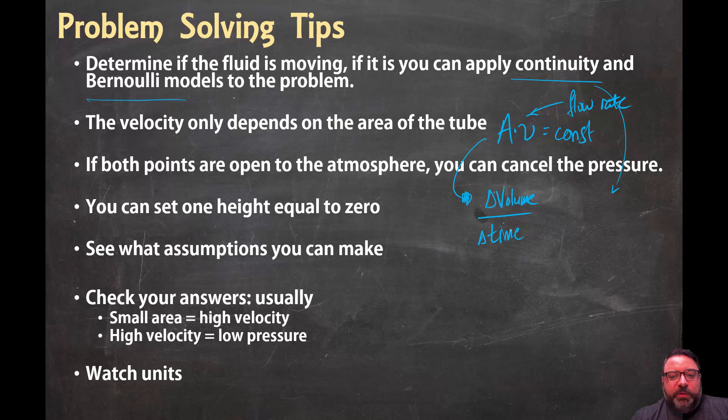So sometimes in a problem, you might be given the volume and the time. It might say, hey, three cubic meters of fluid flow into a tank in 30 seconds. So you'd have your three cubic meters over your 30 seconds and you get a flow rate of 0.1 cubic meters per second. So that's fine. Sometimes you're given that. Sometimes you're given the speed of the fluid, the velocity of the fluid, and the size of the tube. And you can also find the flow rate that way.